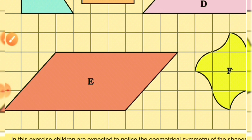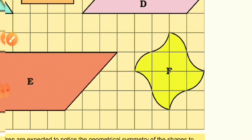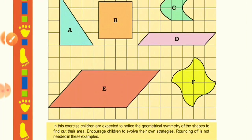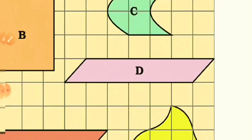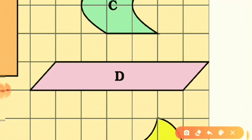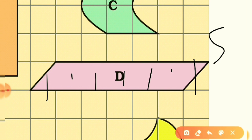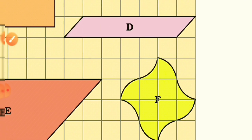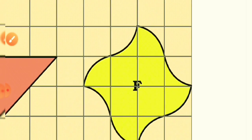For shape D: count the whole squares — 1, 2, 3, 4, 5 — five whole squares. And there are two halves, which makes 1 whole square. So 5 + 1 = 6 square centimeters is the area of shape D.